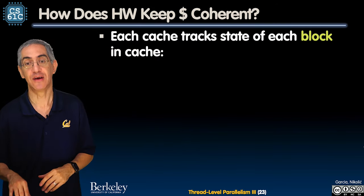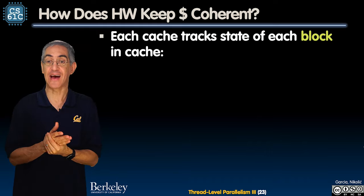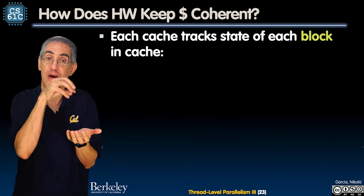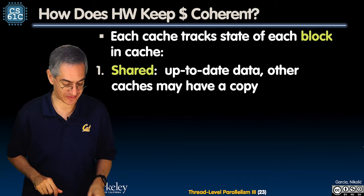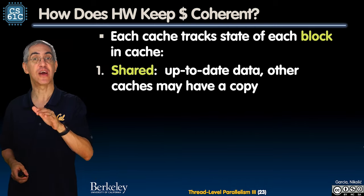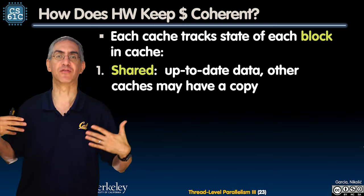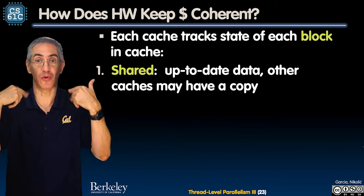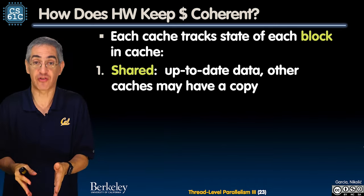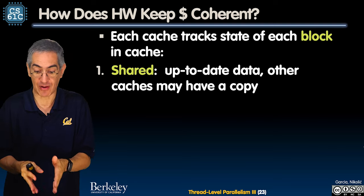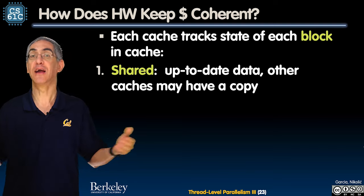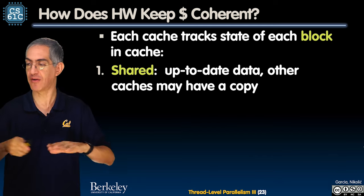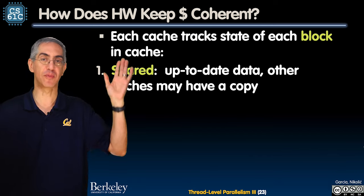So how do we keep them coherent? Each cache block is going to keep track of some bits to track a state. We label these states. Number one: Shared. This is like reads — very easy. If you're shared, it means that I have an up-to-date copy of the data. Other caches may also have a copy. This is the easy case — five people shared, a hundred people shared, all fine.